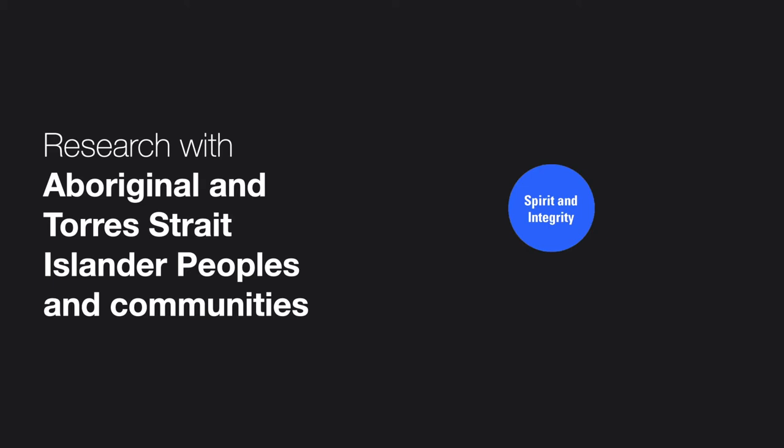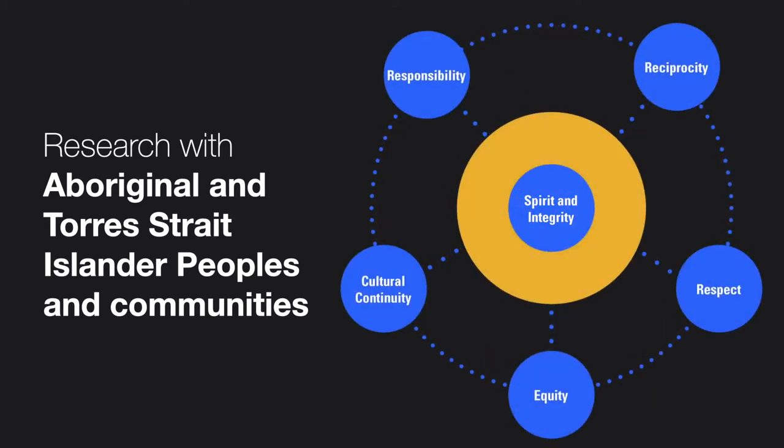The central element of the framework is spirit and integrity — a core value that binds all the other values together. The first part, spirit, is about the ongoing connection and continuity between Aboriginal and Torres Strait Islander people's past, current and future generations. The second part, integrity, is about the respectful and honourable behaviours that hold Aboriginal and Torres Strait Islander values and cultures together.